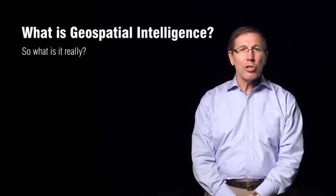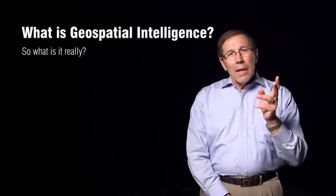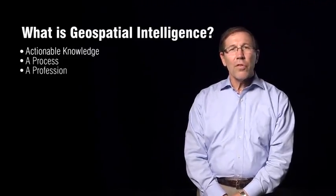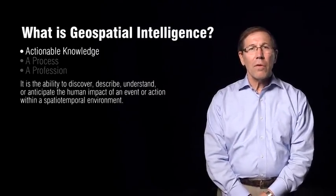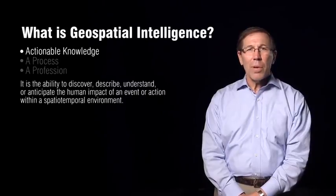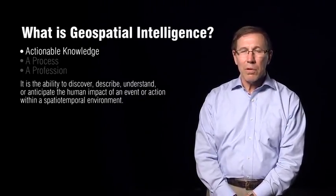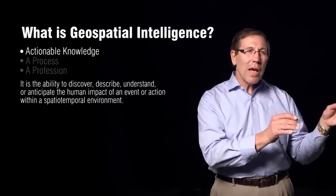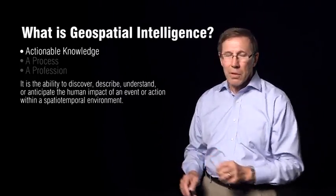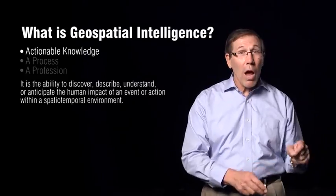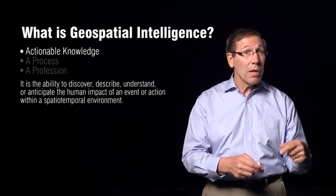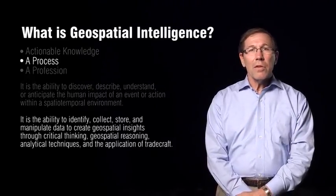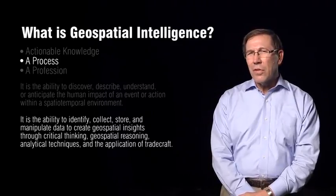Let's look at a more encompassing definition of what GeoInt is — it's three things: actionable knowledge, a process, and a profession. First, actionable knowledge: it's the ability to discover, describe, understand, and anticipate the human impact on an event or action within a spatiotemporal, or space-time, environment. When I say actionable, that means you can take that information and actually apply it — for example, it could tell me where I might want to buy a house. It's something I can act upon. As a process, it's the ability to identify, collect, store, and manipulate data to create insights using a tradecraft.